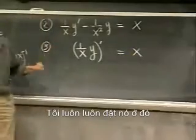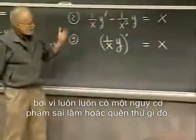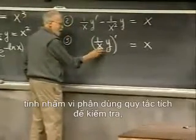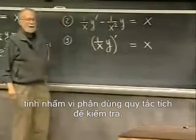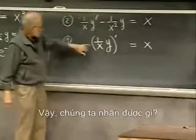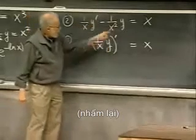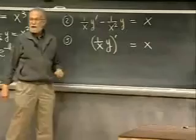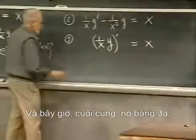I always put that in, because there's always a chance you made a mistake or forgot something. Look at it, mentally differentiate it using the product rule just to check that it turns out to be the same as the left-hand side. So what do we get? One over x times y prime, plus y times the derivative of one over x, which is negative one over x squared.